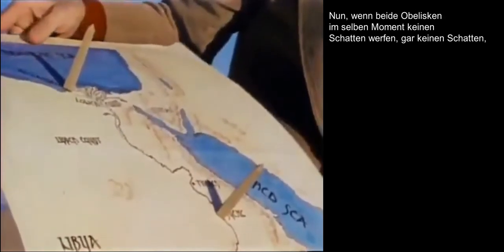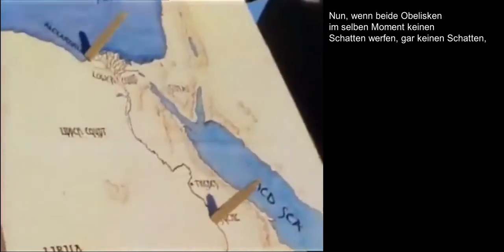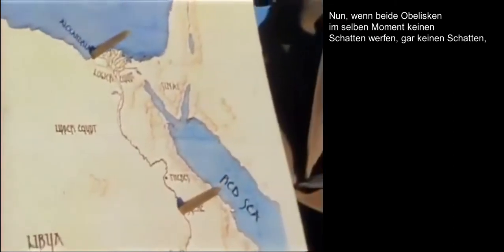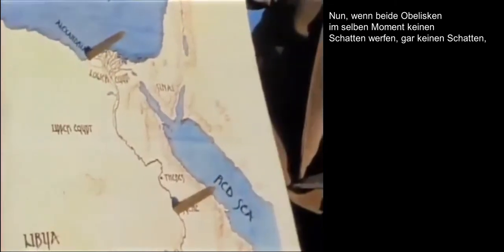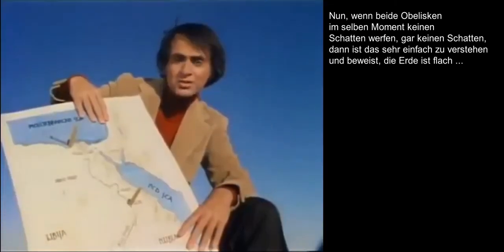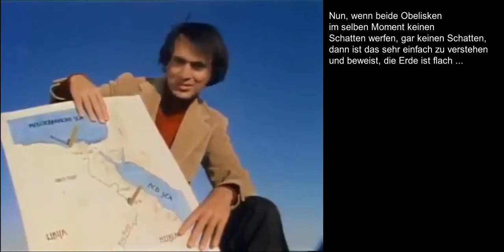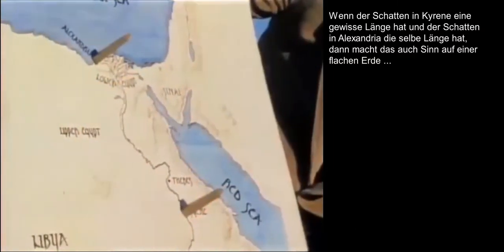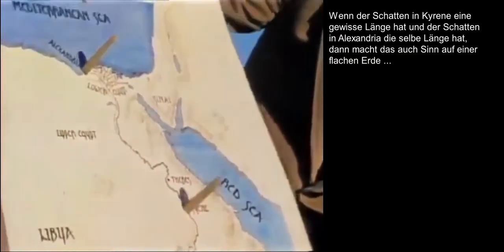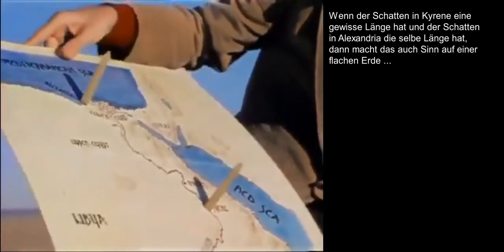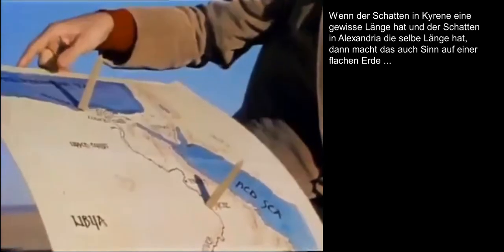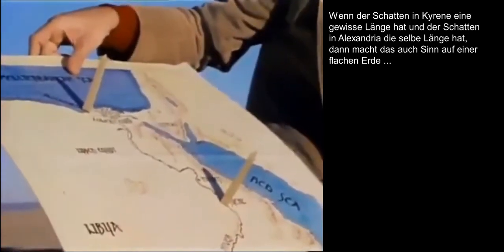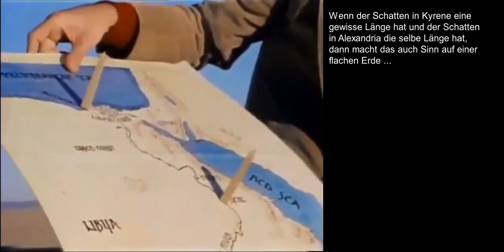Now, if at a certain moment each stick casts no shadow — no shadow at all — that's perfectly easy to understand, provided the Earth is flat. If the shadow at Syene is at a certain length, and the shadow at Alexandria is the same length, that also makes sense on a flat Earth.